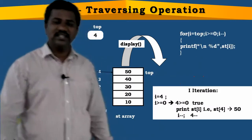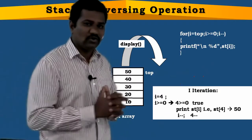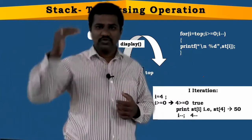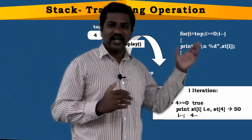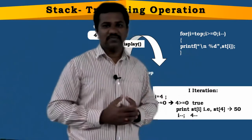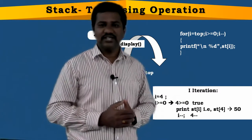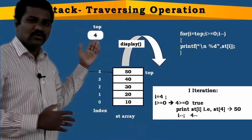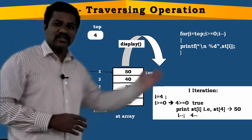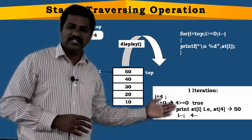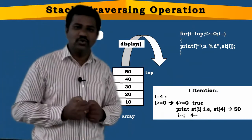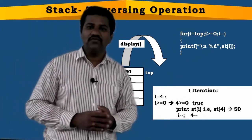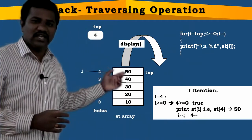In this for loop: i is assigned with top (value 4), condition is i greater than or equal to 0, and i decrement (i--). Inside the loop we have printf of st[i]. So i=4, and 4 >= 0 is true, so we enter the loop. We print st[4], which is 50. After printing 50, i-- means 4-- so from the next expression onwards i becomes 3.